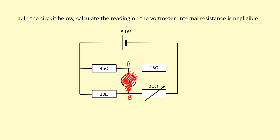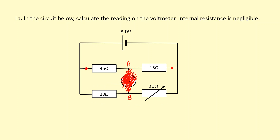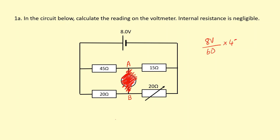So I'm rubbing it out so it doesn't distract me. What we have here is two resistors in series, and that combination is in parallel with another two resistors in series. Between the top and bottom points the potential difference is eight volts, because they're connected directly across the battery. I'm going to take eight volts and divide it by 60 ohms — the resistance of this branch — then multiply by 45 to get the potential difference across the 45 ohm resistor.